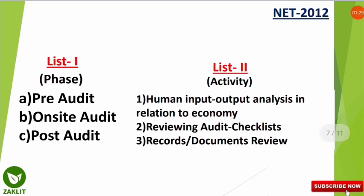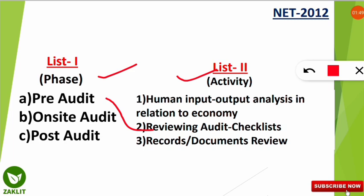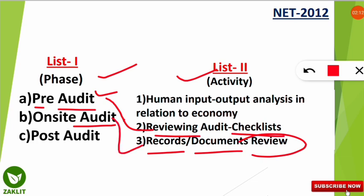The next question is a match-the-following in which we match the correct audit phase with its activities. The pre-audit phase matches with reviewing the audit checklist — before the audit starts, you review the checklist of steps to follow. The on-site audit phase matches with records and documents review — when at the site, you check and review records. The post-audit phase matches with human input-output analysis in relation to economy — analyzing what humans input, the output, and the economic effect of that project.